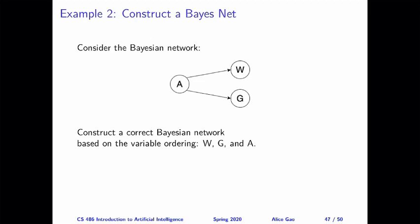For the second example, we have alarm, Watson, and Gibbon — where Watson and Gibbon are noisy sensors of alarm. We try to construct a correct Bayesian network with the variable ordering W, then G, then A. One important difference in the correct answer is that we have an additional link from W to G. The reason is that we are adding W and G much earlier, before adding A. So when we're adding G, it is not independent of W based on the original Bayesian network, and therefore we need this link from W to G.